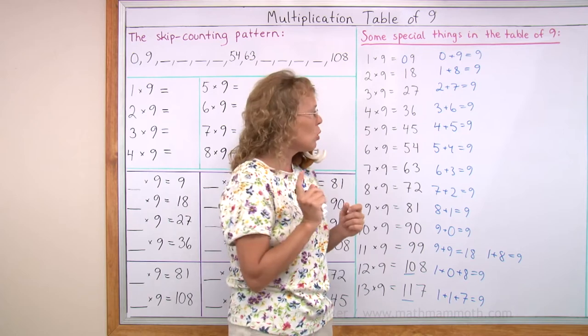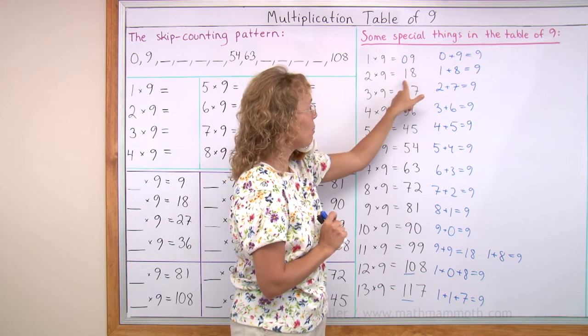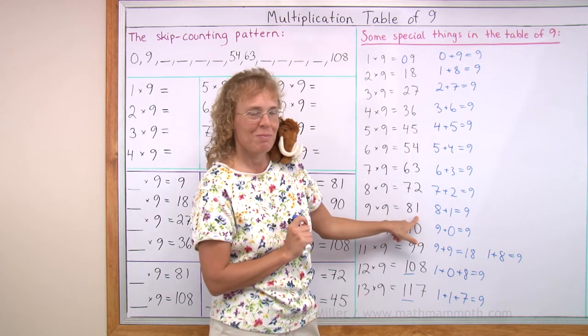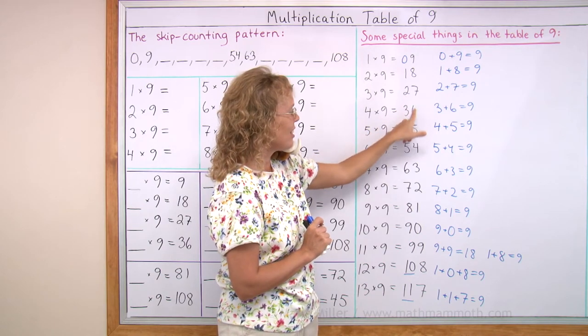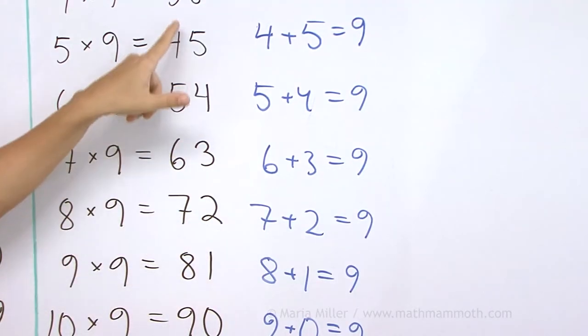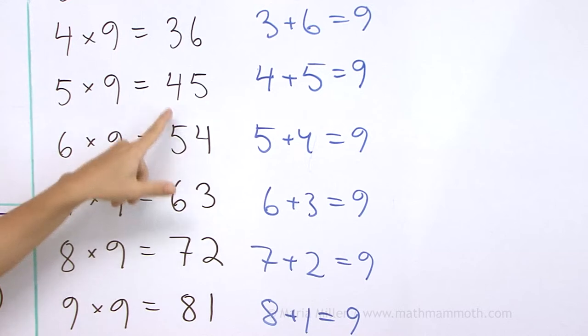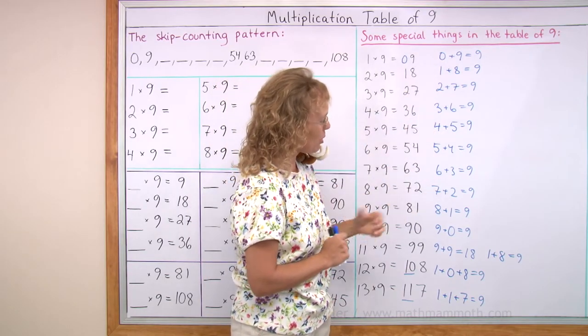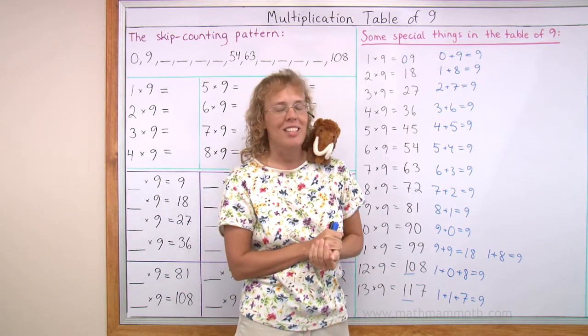Lastly, if you didn't yet notice this, I want to point out to you that we have here 18, 1 and 8, and over here 8 and 1. And then we have over here 27, 2 and 7, and then over here 7 and 2, 72. And also 36, 63, and then 45, 54. You probably noticed it while I was adding all those numbers though.